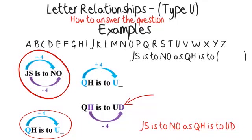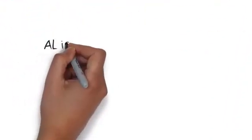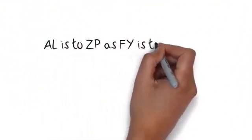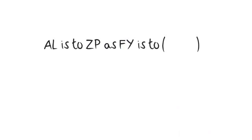A-L is to Z-P as F-Y is to. The first thing you should notice is that the first letters in the first pair are A and Z, so the code is using the mirrored alphabet.